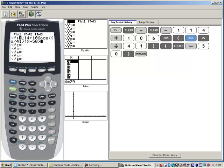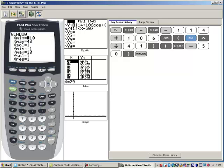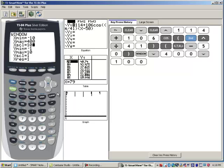My window, I'm going to start x minimum, negative 10 is fine. My x maximum, let's look out about 400 seconds. And then x scale, let's go by hundreds.